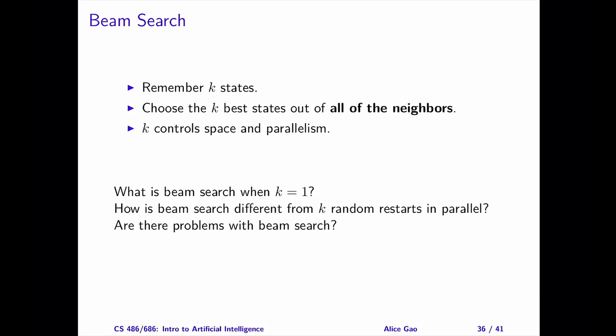For example, if one of the k states, called x, has some really good neighbors, then it's possible that the next population consists of only state x's neighbors. It is as if state x is waving its hand to the other states and saying, look, I'm in a really good region, come over here and join me. Therefore, k random restarts in parallel are independent searches, whereas the k states in beam search are not independent.